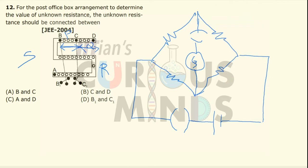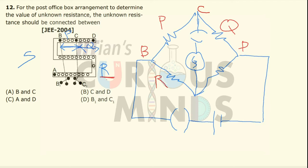There is an EMF connected. Resistance P is the known resistance, Q is another known resistance, and R is another known resistance. Q is connected between point C and D, P is connected between point B and C, and the known resistance R is connected between point A and B.